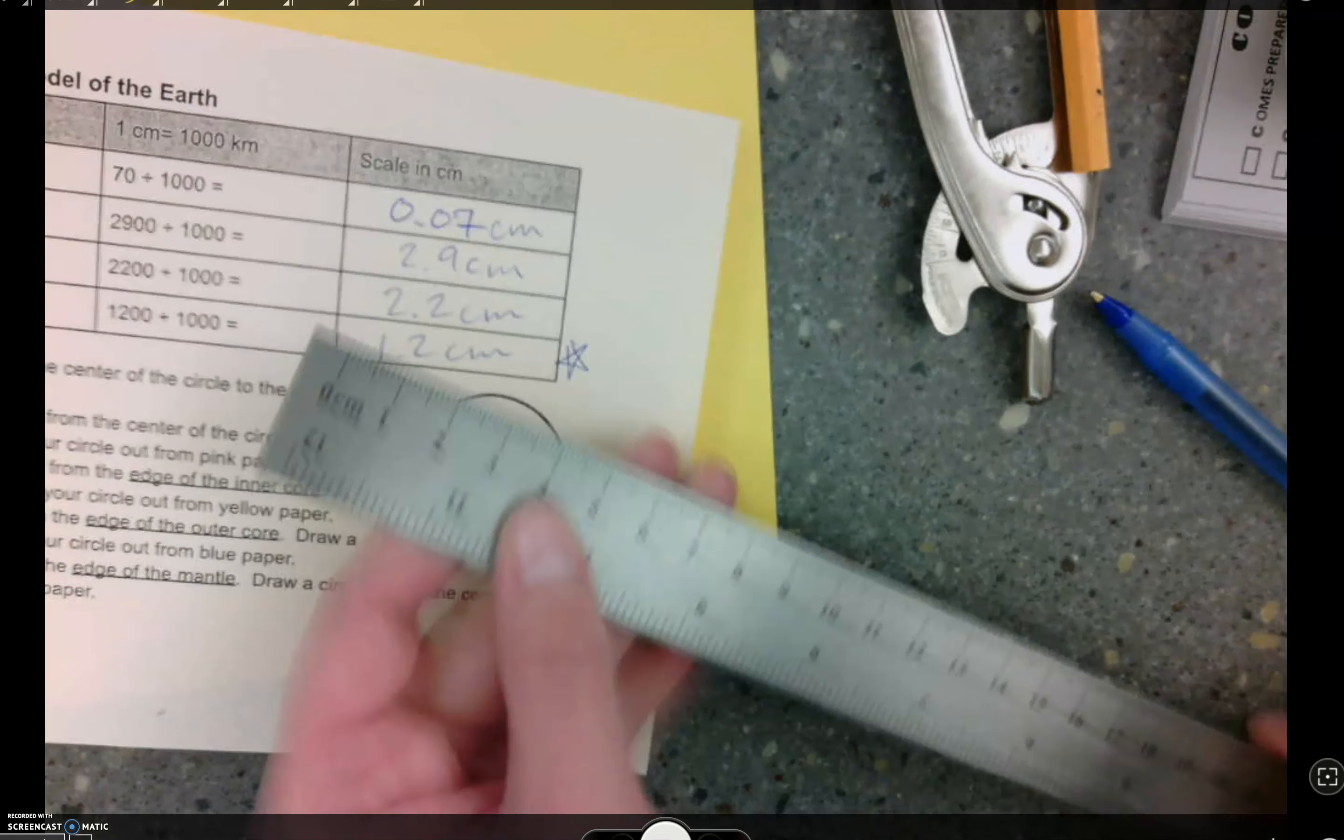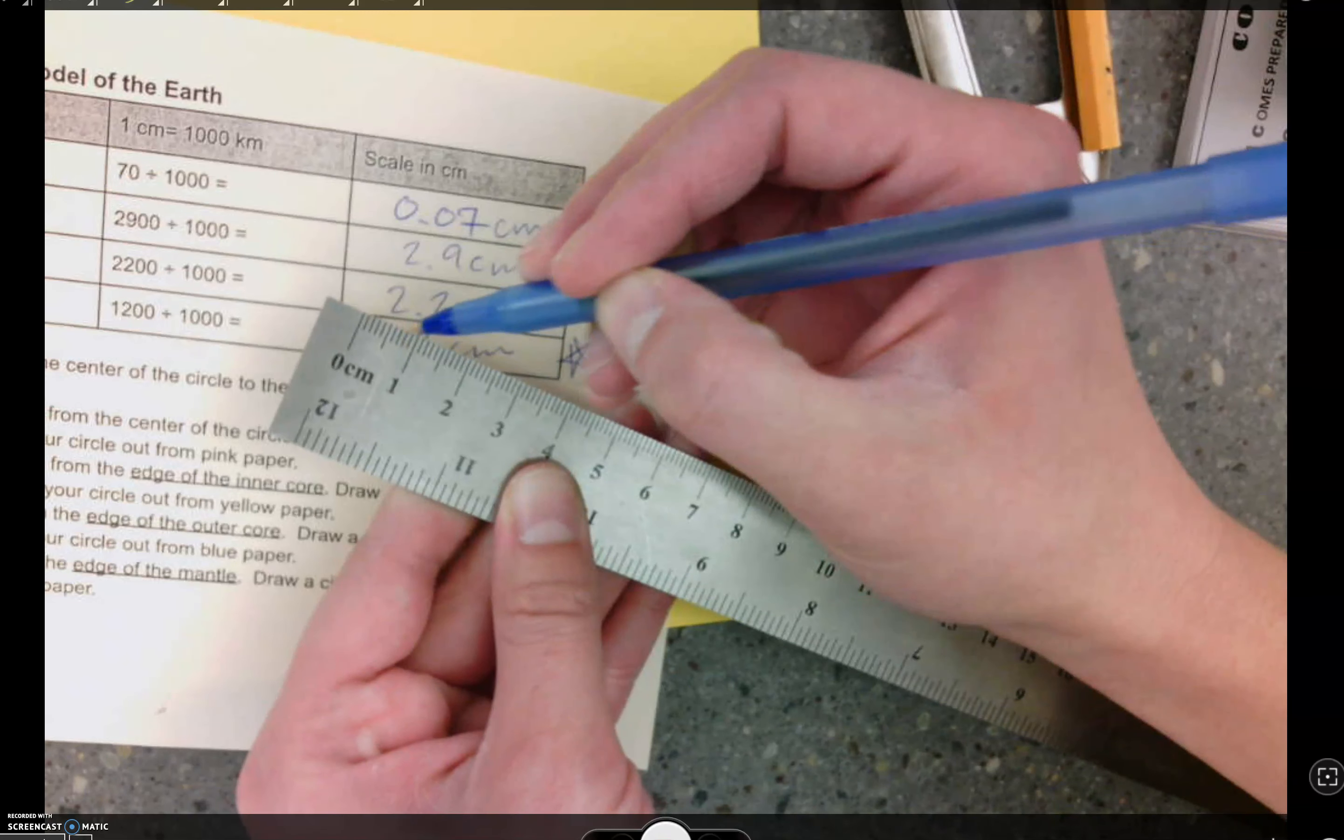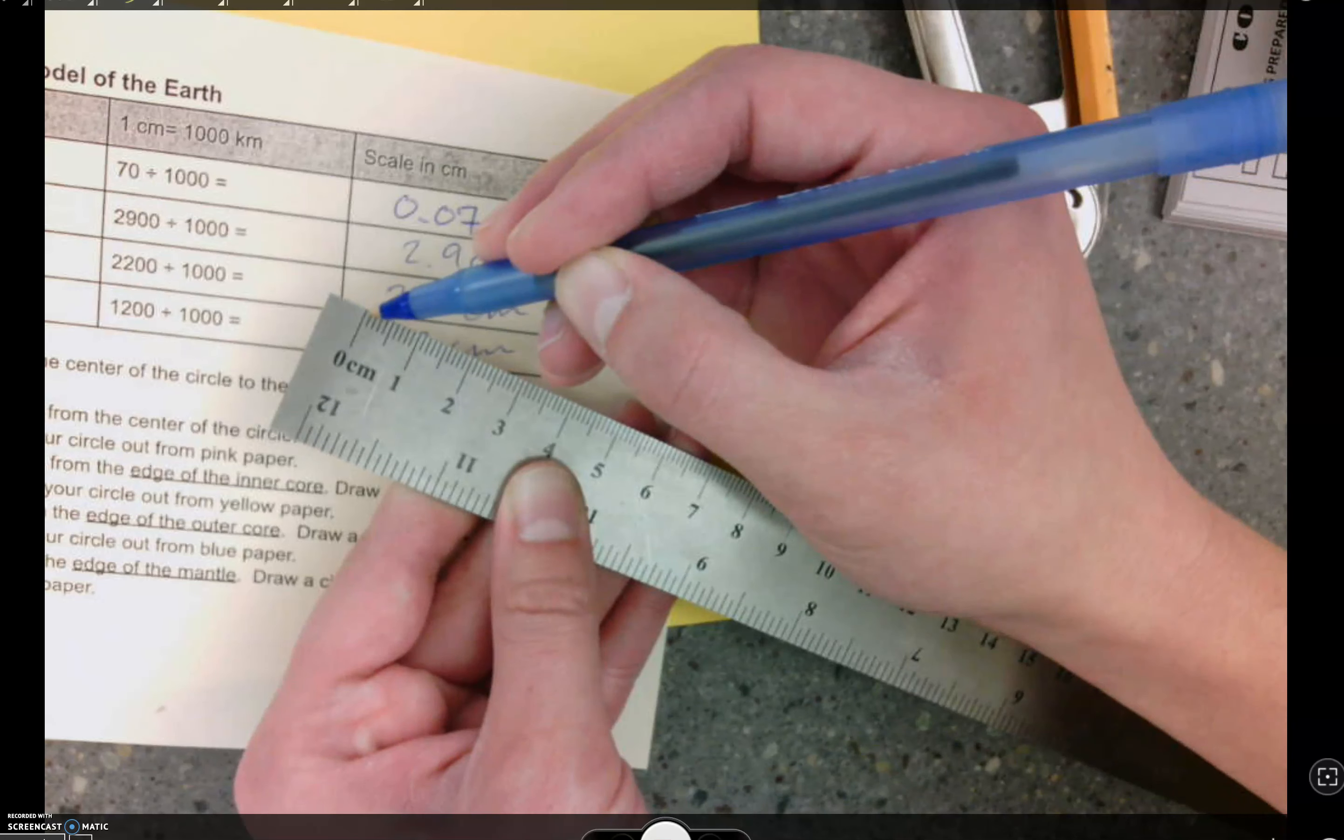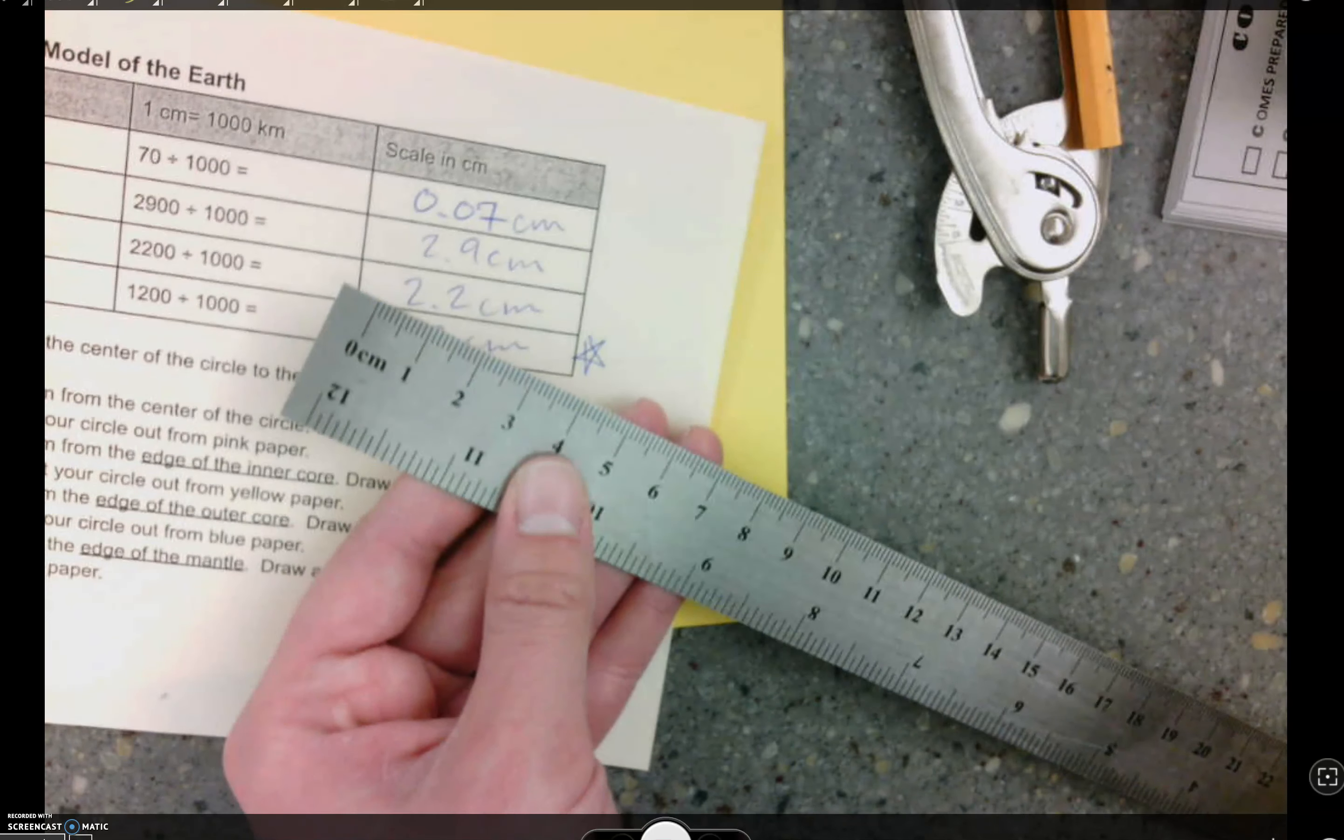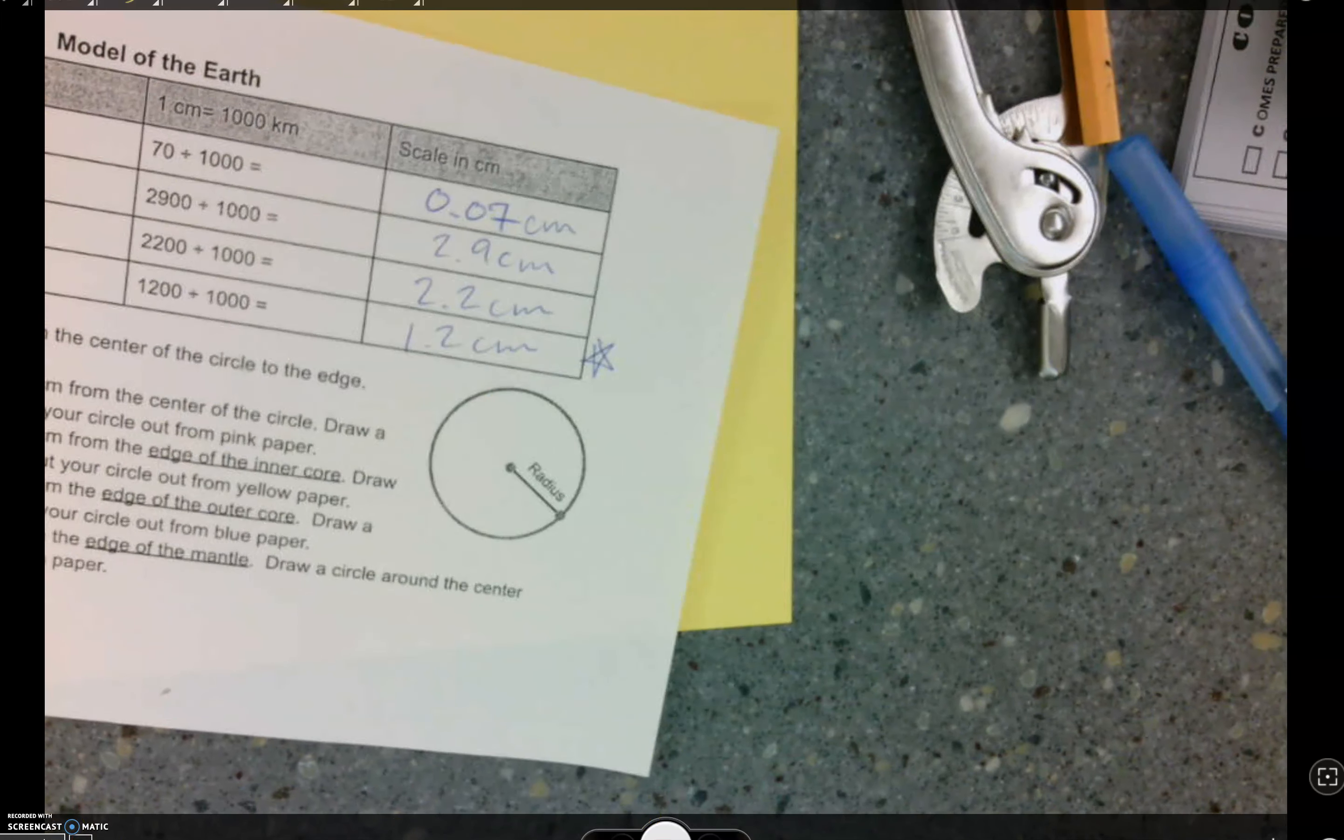Now guess what? 0.07 centimeters is not the same as seven little lines. These seven little lines would be 0.7. So 0.07 is smaller than the space between 0 and 0.1. Look at the space between 0 and 0.1. You see that? 0.07 is even smaller, even skinnier than that. So are you going to be able to see very much green on your model? No. You're going to see barely any green. You're going to cut it very, very, very thin. Okay? Do you have any questions about this before we start? Okay, cool. Let me pause this.